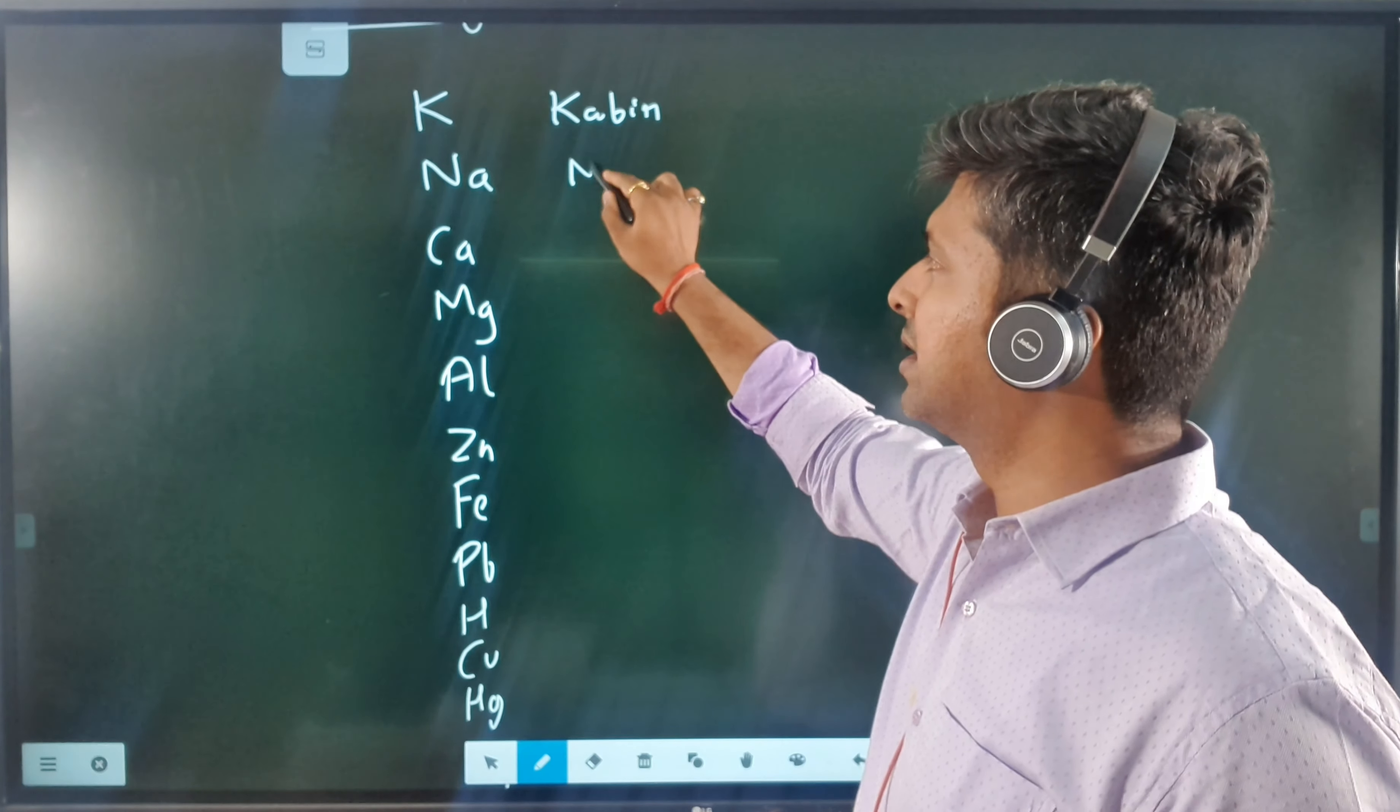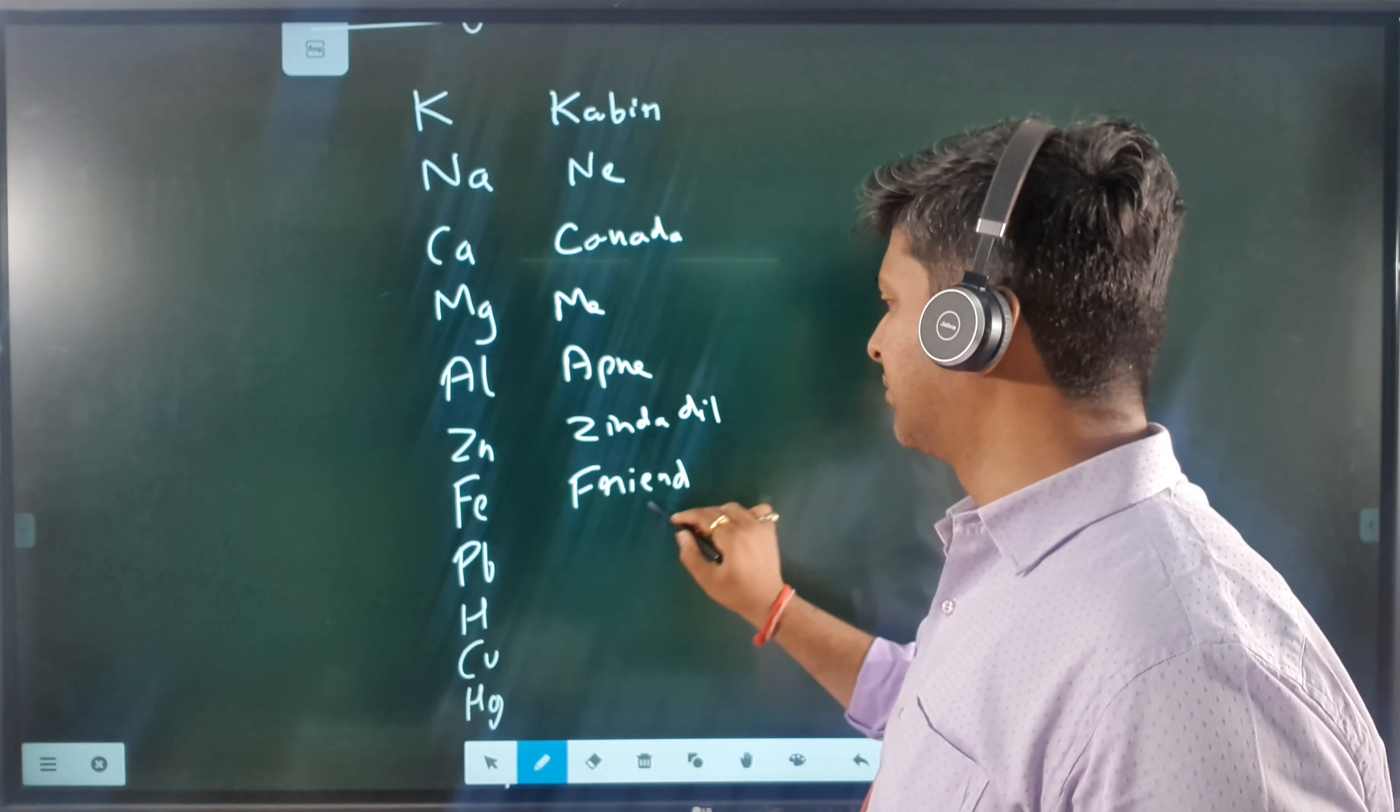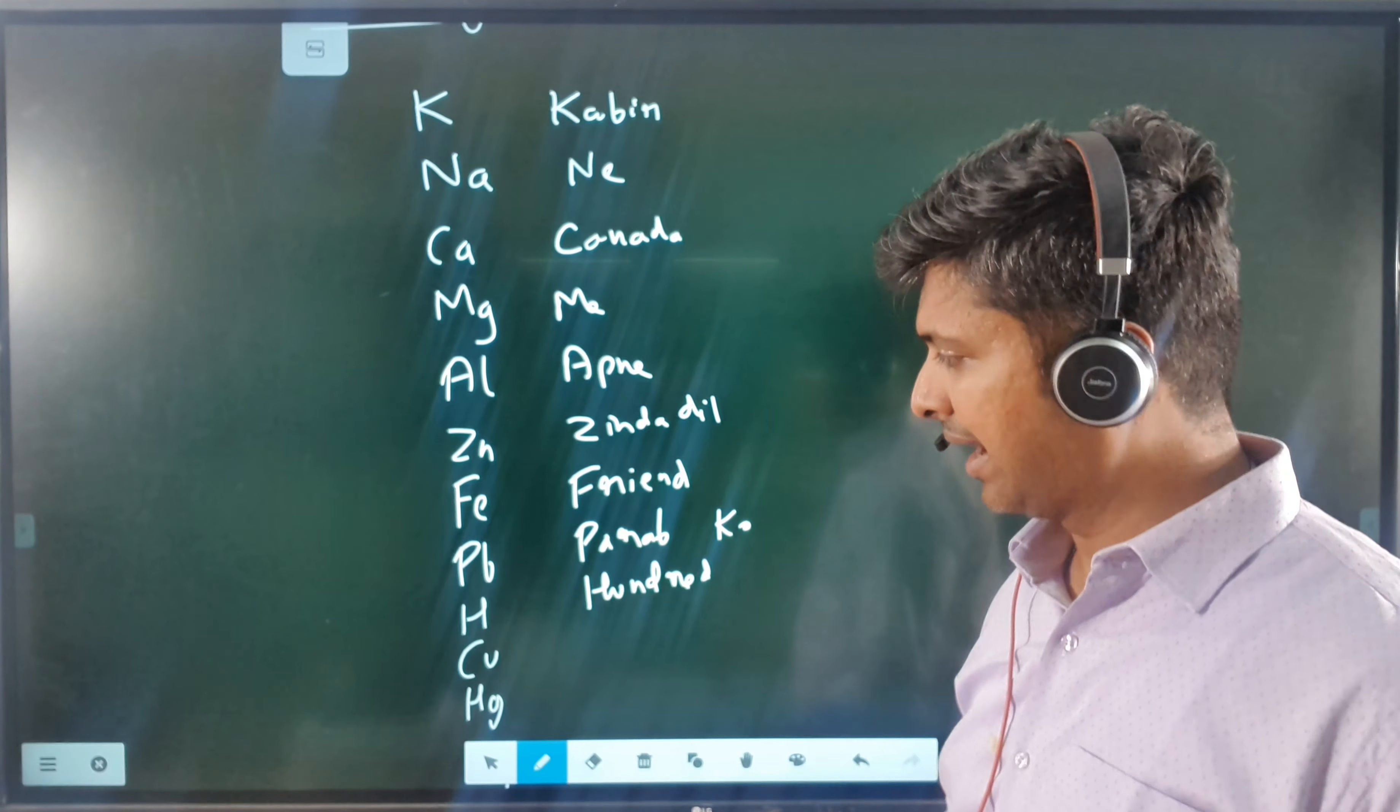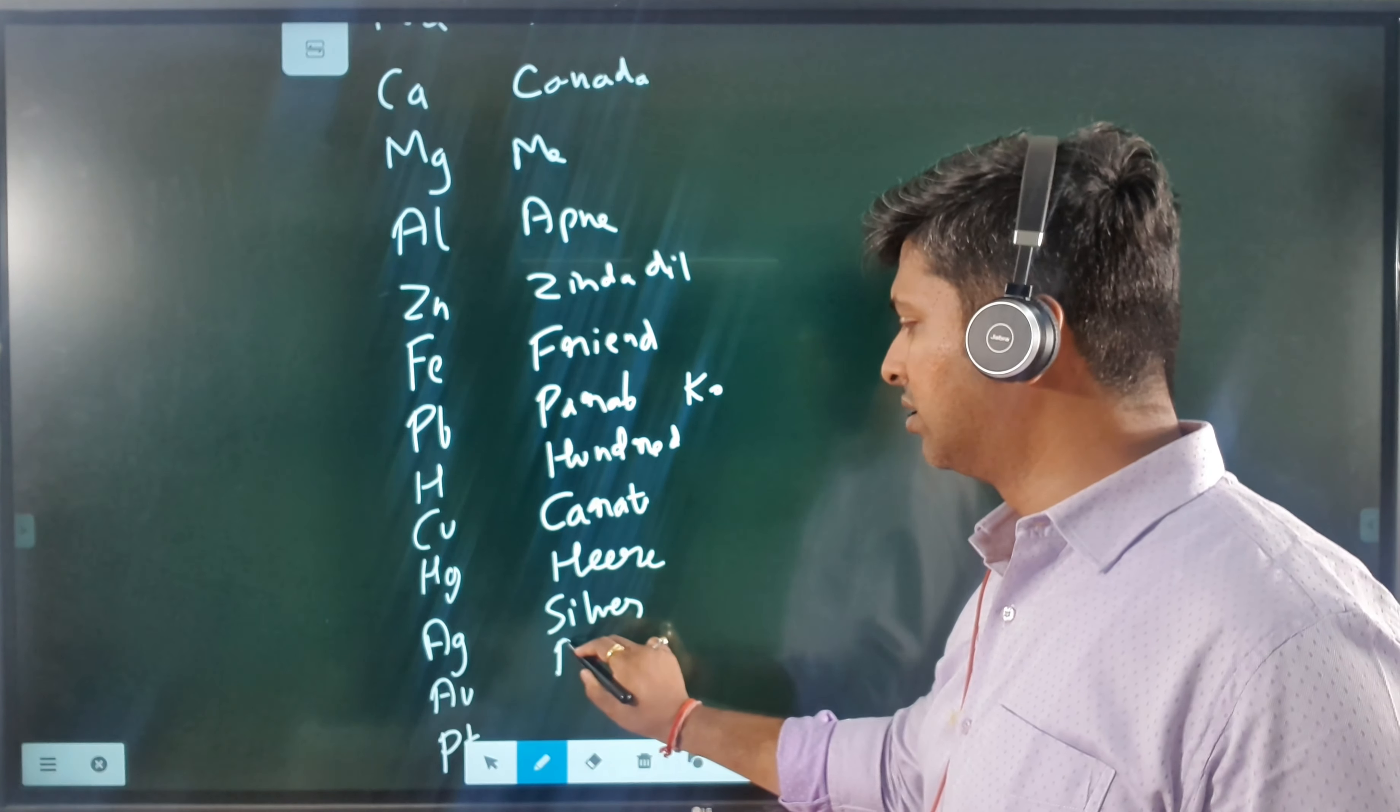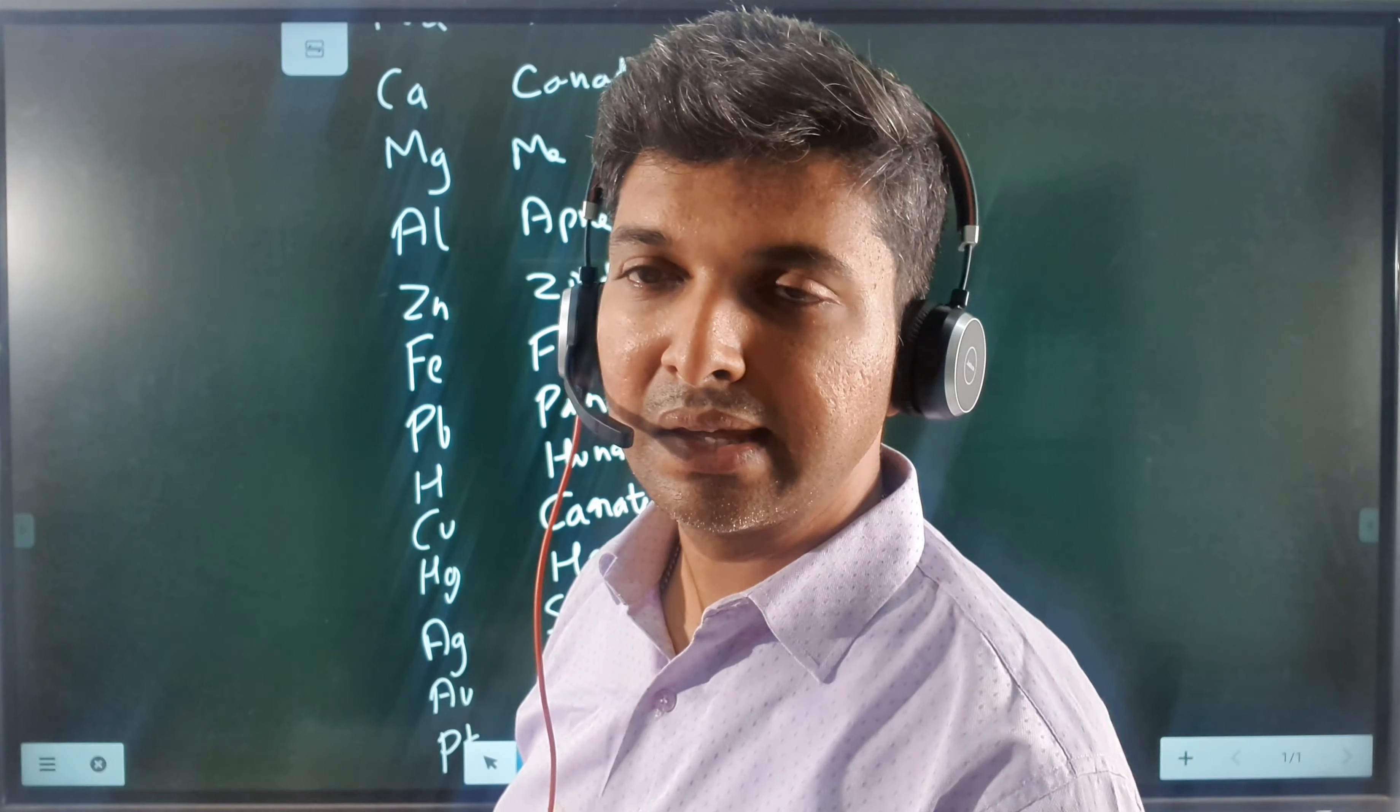You can remember it like this: Kabir ne Canada mein apne zinda dil friend Parab ko hundred carrot here a silver gold platinum dia. Zinda dil is one word. Parab is the name of the friend. With hundred you'll remember hydrogen, carrot you'll remember copper, here a for silver (Ag), gold (Au), and platinum (Pt).